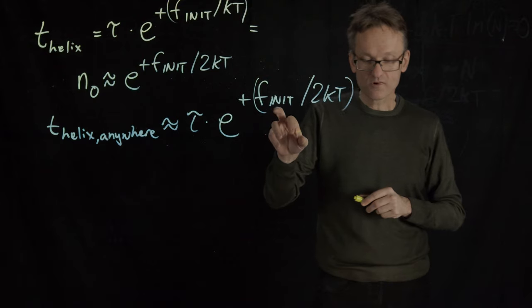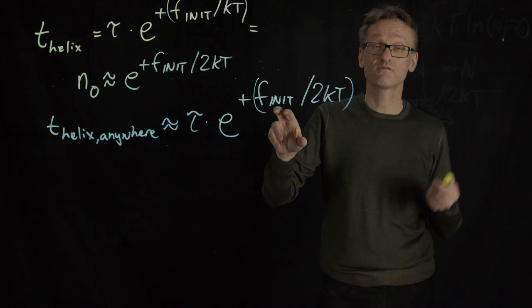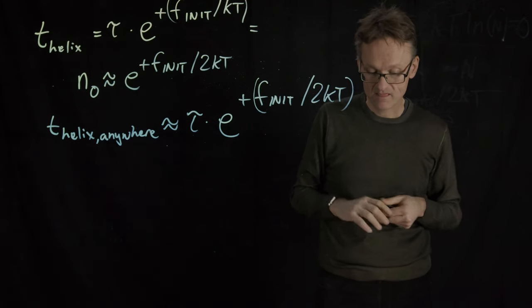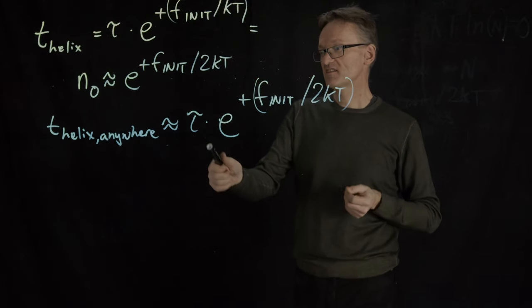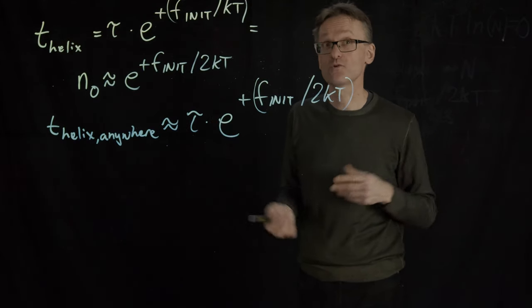But we also knew roughly what the f_init was. The f_init was in the ballpark of 4 or 5 kcal divided by 2kT, and the tau process was in the ballpark of a nanosecond. Again, order of magnitude estimates.